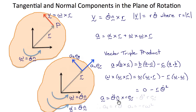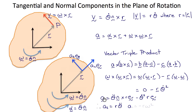Therefore a = θ-double-dot · (n × r) e_r − θ-dot² · r · e_r. The tangential component of acceleration is r·θ-double-dot, because the tangential direction is n × e_r, which is perpendicular to the plane of n and r. The normal component a_n is −r·θ-dot², which equals −r·ω². So the tangential component is r times the magnitude of angular acceleration, and the normal component is −r times the square of the angular velocity magnitude.